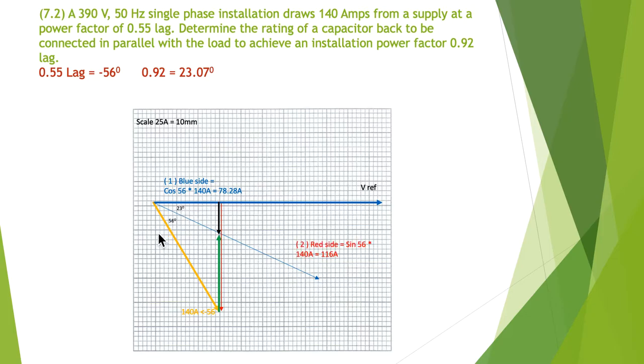Next, I work out the red triangle. Since I have the blue triangle side and this angle, I can use the sine of the angle to work out the red side: sine of 56 degrees multiplied by 140 equals 116 amps. Next, I work out the black side using tangent of 56 degrees multiplied by 78.3, giving me the black side.